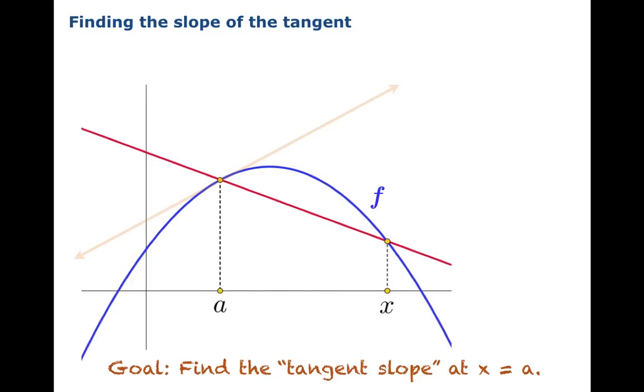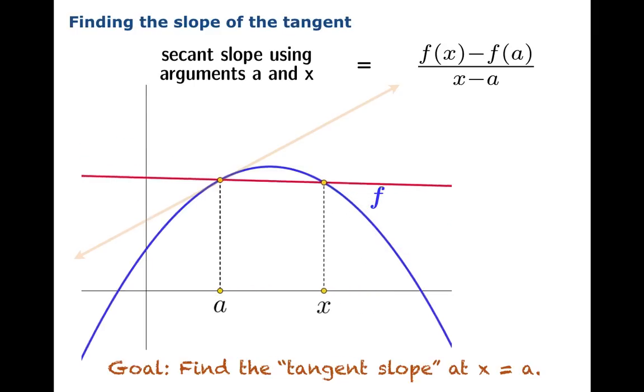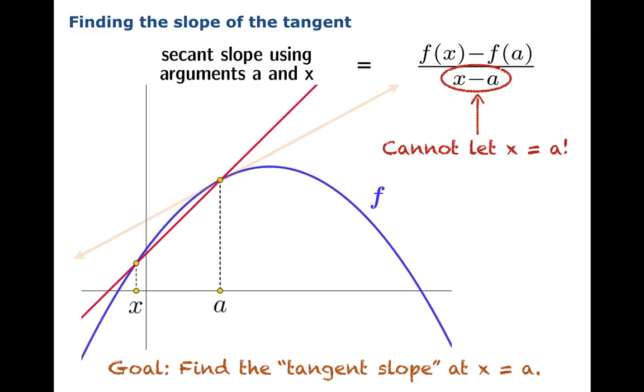The way we're going to do it is we're going to calculate a secant slope from a to x. Now clearly that's not what we want, but we could let x sneak up to a. The closer x gets to a, the closer the secant slope seems to match the target slope we want to calculate. Now it gets so tantalizingly close, you might think we could just let x actually equal a. But that's a real problem. If x equals a, you have zero in the denominator. That's a disaster. So we can't just let x equal a.